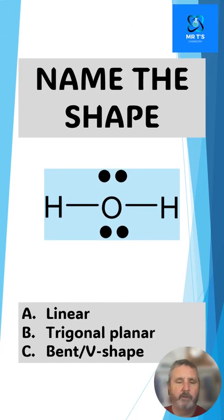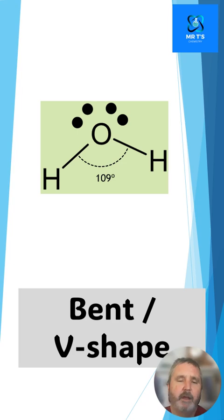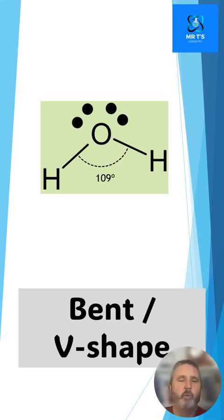Let's have a look at this Lewis diagram. This is a Lewis diagram of H₂O, or water. Is its shape going to be A linear, B trigonal planar, or C bent V-shaped? Don't let the initial Lewis diagram fool you — this is a bent V shape. It is not linear because it's based on the base shape of a tetrahedral with four electron density regions pushing away from each other for maximum separation, giving an angle of 109 degrees between the bonds.